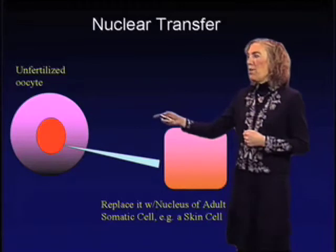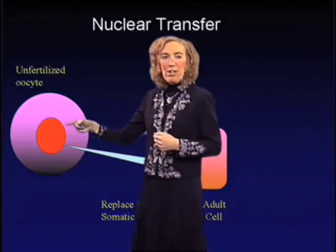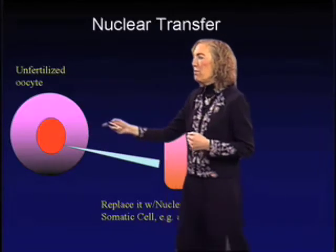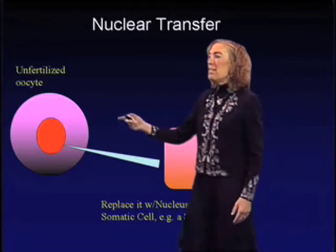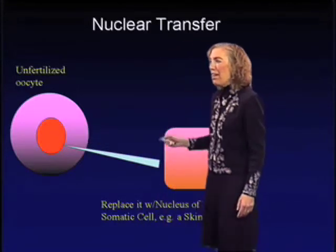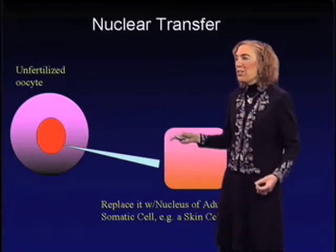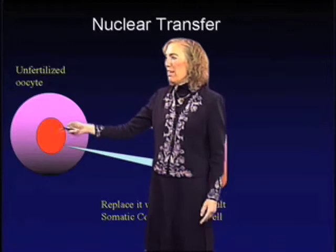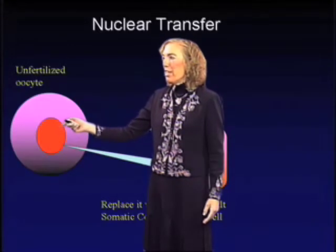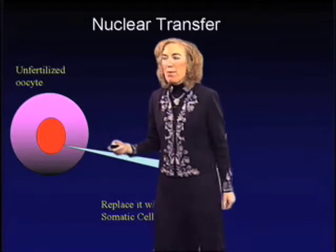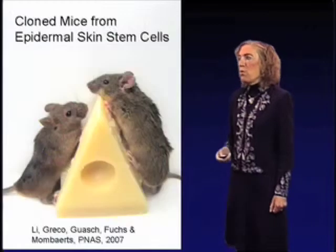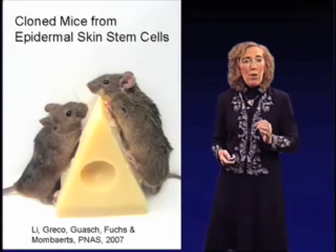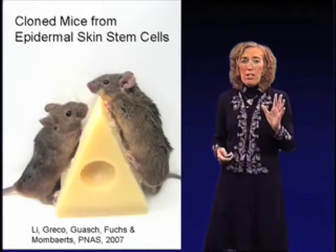We have now generated a hybrid cell. The cytoplasm of this cell comes from the unfertilized oocyte, and the nucleus comes from an adult somatic cell. This is a diploid nucleus because all somatic cells of your body are basically diploid. So what this cell now has is a diploid adult nucleus sitting in an oocyte cytoplasm. We then take this cell and put these cells in culture — just as I described — and generate embryonic stem cells, produce blastocysts, mini blastocysts, everything in vitro at that point.